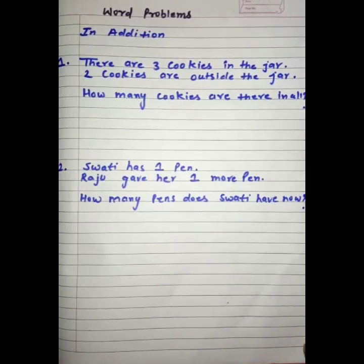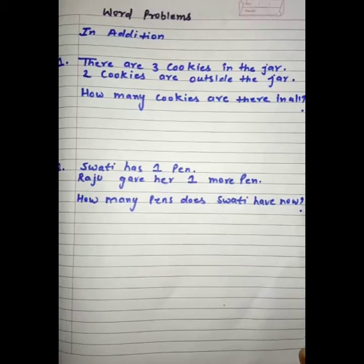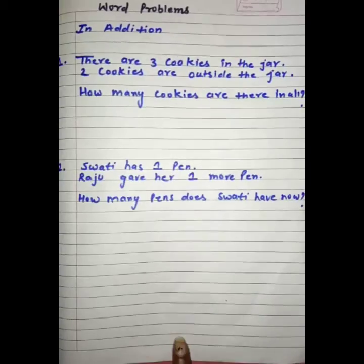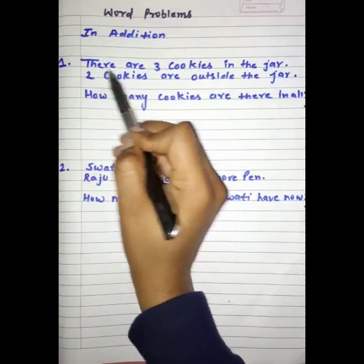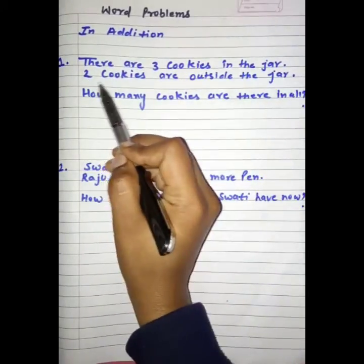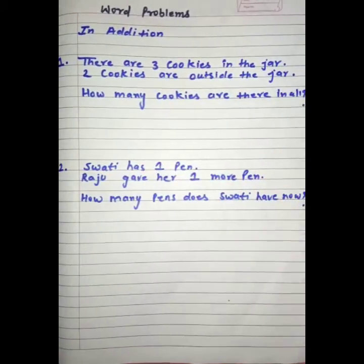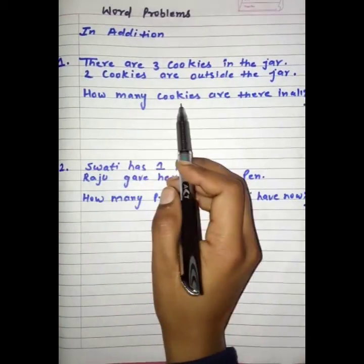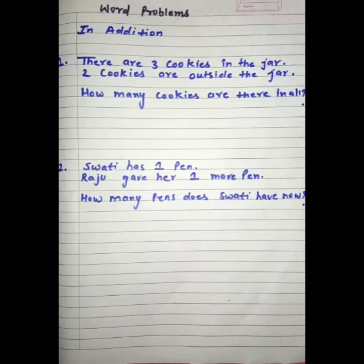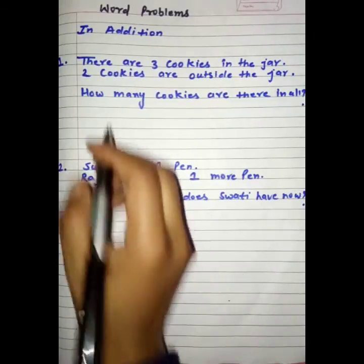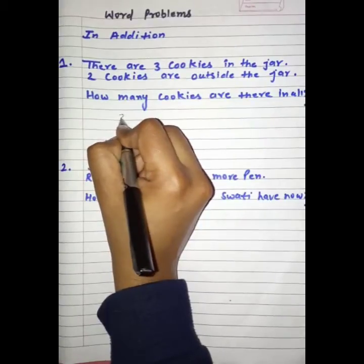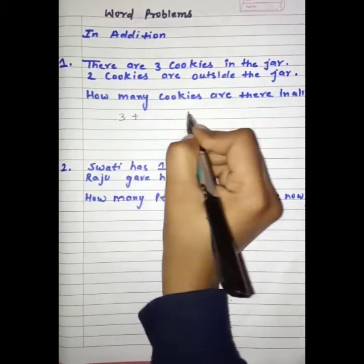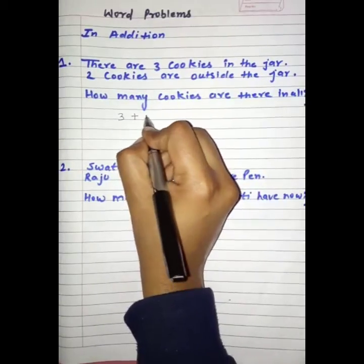So, students, ab hum padhen ge word problems. Listen carefully because aapke ye exams mein aayenge. First question: there are 3 cookies in the jar. Two cookies are outside the jar. Jar ke andar 3 cookies hai and 2 cookies baahar hai. How many cookies are there in all? Jar ke andar 3 cookies, plus 2 baahar.